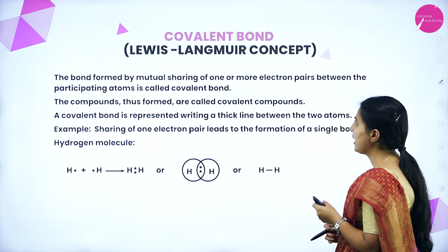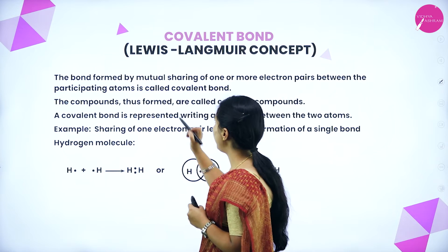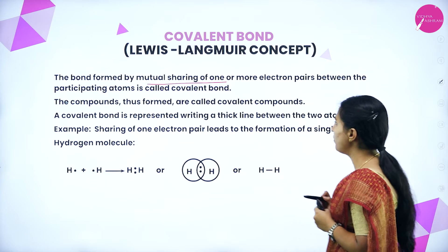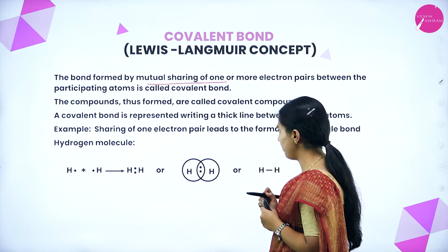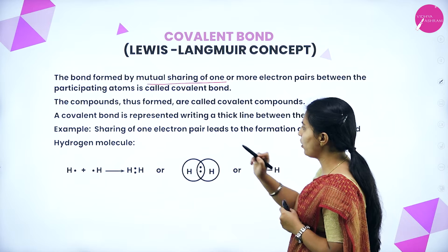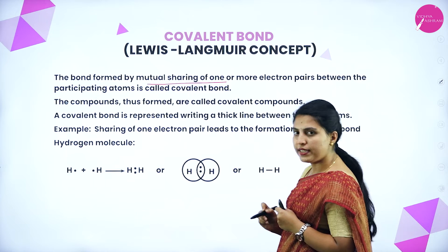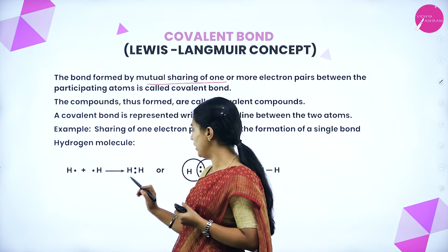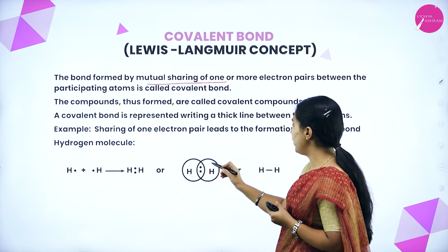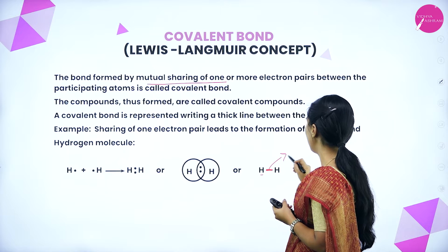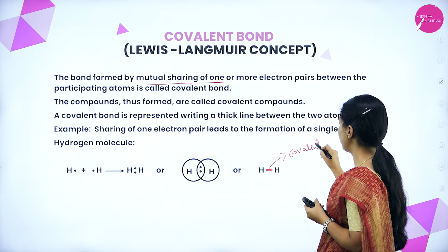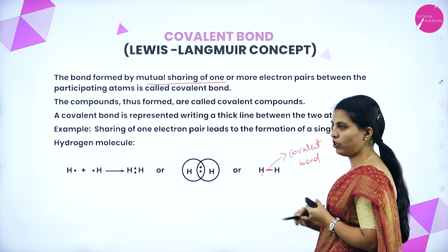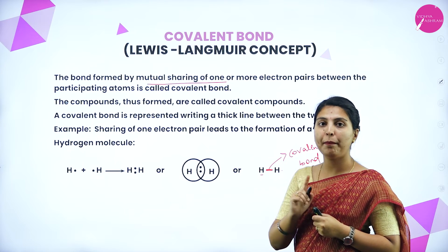Next we will see the covalent bond — the Lewis-Langmuir concept. The bond formed by mutual sharing of one or more electron pairs between participating atoms is called a covalent bond. Compounds thus formed are called covalent compounds. A covalent bond is represented by a thick line between two atoms. Sharing of one electron pair leads to the formation of a single bond. For example, hydrogen with valence 1 combines with another hydrogen atom to form one pair of electrons — this is a covalent bond, equivalent to two electrons or one pair of electrons.